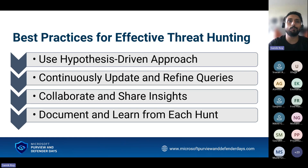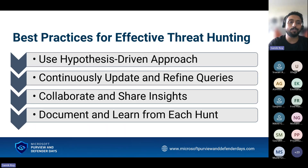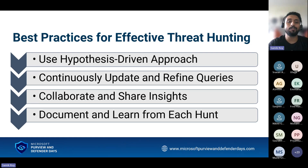Finally, document each hunt. This doesn't mean pages of documentation — just record your iterations. For example, iteration one sets a threshold of 10 failed logins and one success. If that catches 30% of cases, try iteration two with five failed logins. Either combine both into one rule, use two separate rules, or find a middle ground like a threshold of seven. Without documentation, six months later you won't understand why a threshold was set at a particular value.